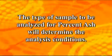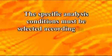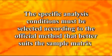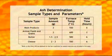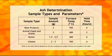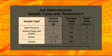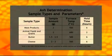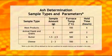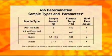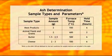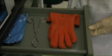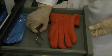The type of sample to be analyzed for percent ash will determine the analysis conditions. The specific analysis conditions must be selected according to the official method that better suits the sample matrix. Here is a chart with the method applications and test condition variables. The sample type will dictate the amount of sample weighed, the furnace temperature setting, and the length of time the sample will be held at that temperature. Times, temperatures, and sample weights may be varied if necessary to correspond with similar official methods better suited for the sample matrix. Exercise extreme caution when working with the oven and the muffle furnace. Use heat resistant gloves and tongs when handling sample containers.